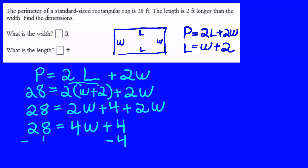Then I'll move the constant terms together by subtracting 4 from both sides. That will give me 24 on the left, and 4W plus 0 on the right. So now we've got 24 equals 4W.